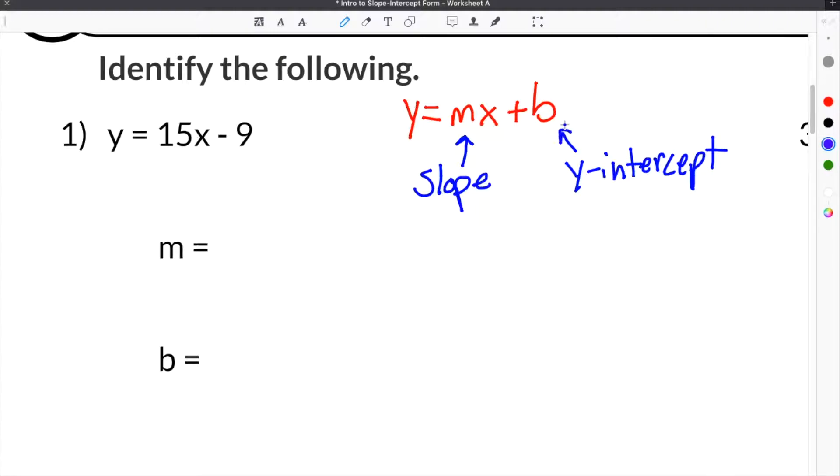So B represents the Y-intercept. When you look at our problem for number 1, it gives us Y equals 15X minus 9. If we were to overlay slope-intercept form above our problem given to us, you will notice that M and B line up with certain things in the equation that was given to us.